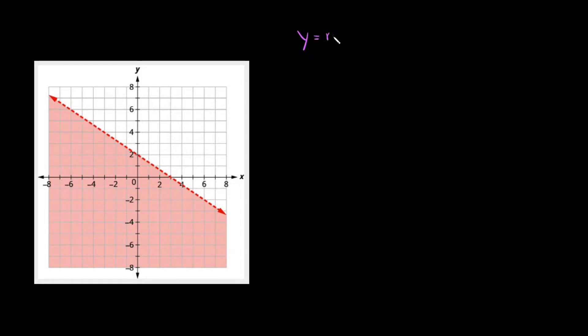The first thing you want to do is find the equation of your line right here, and the way we're going to do that is using the slope-intercept form of an equation, which is y is equal to mx plus b. There are just two things we have to figure out with this equation — first, what the b is, and the b is your y-intercept.